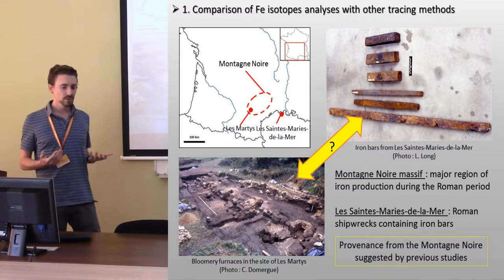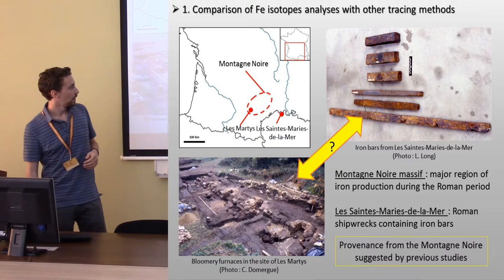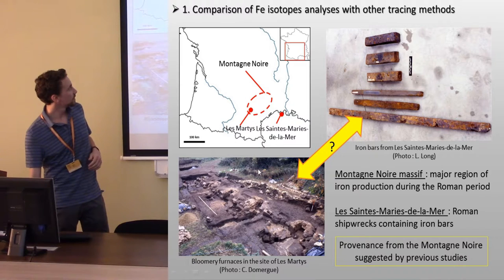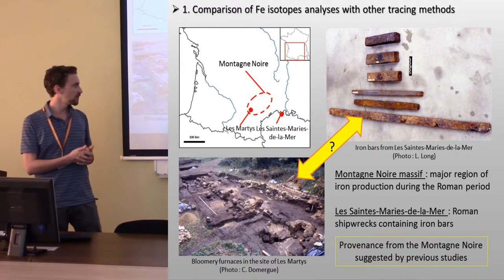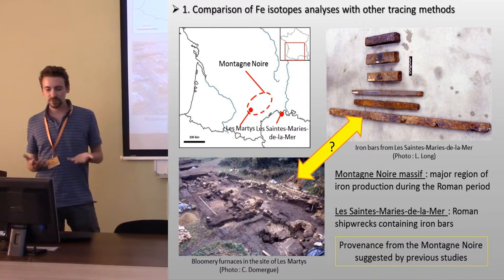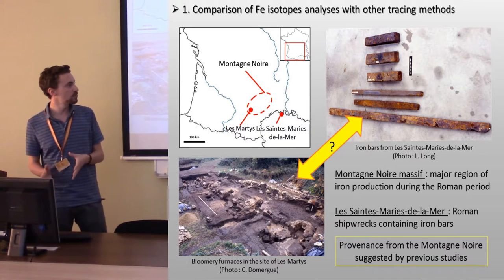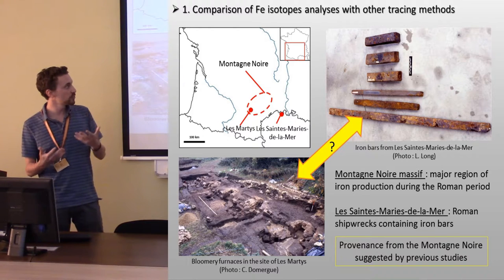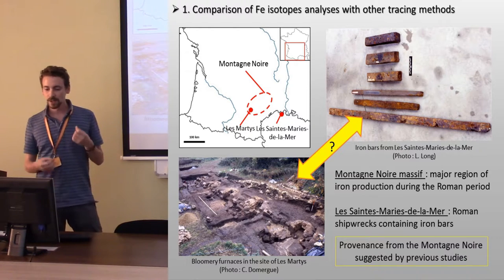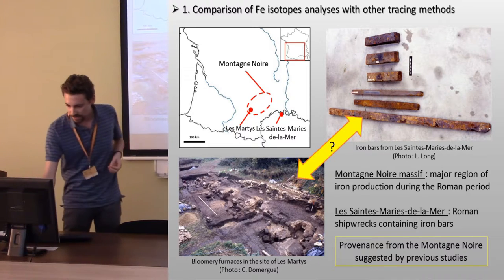The Montagne-Noire was a major region of iron production during the Roman period. Here in the site of Les Martys, many remains of bloomery furnaces have been found. Previous studies have suggested that some of the bars found in the Roman shipwrecks at Saint-Marie-la-Mer had been produced in the Montagne-Noire, so we tested this hypothesis with iron isotopic analysis.